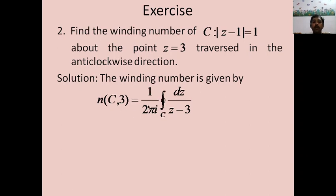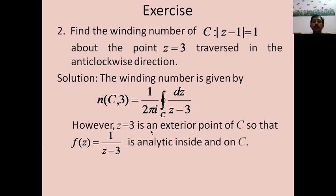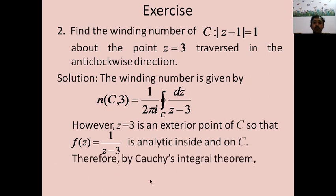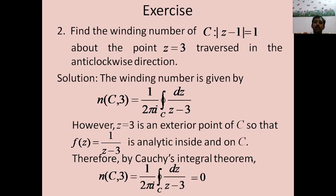We verify this using the formula: n(C, 3) = (1/2πi) ∫_C dz/(z − 3). Since z = 3 is an exterior point of C, the integrand 1/(z − 3) is analytic inside and on C. By Cauchy's integral theorem, the integral over C is 0, so n(C, 3) = (1/2πi) × 0 = 0. This confirms the winding number is 0.